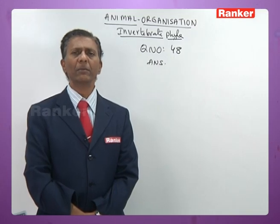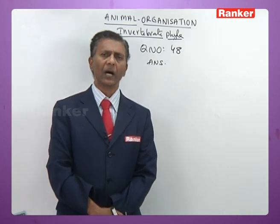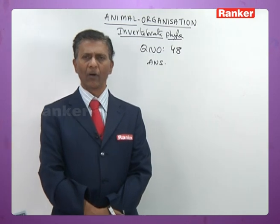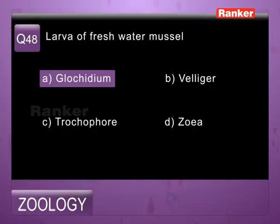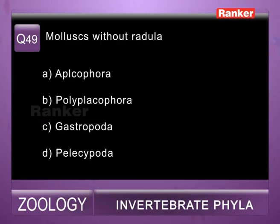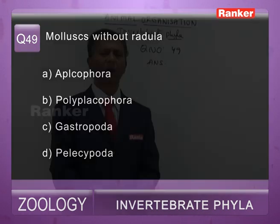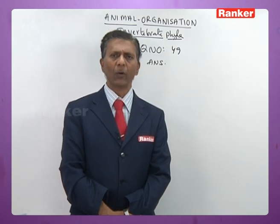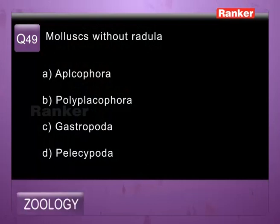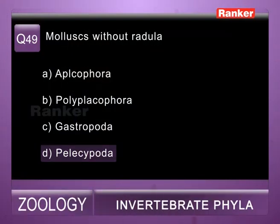Question forty-eight: larva of freshwater mussel — a) glochidium, b) veliger, c) trochophore, d) zoea. Glochidium is the correct answer for forty-eighth question. Question forty-nine: molluscs without radula — a) Aplacophora, b) Polyplacophora, c) Gastropoda, d) Pelecypoda. In Pelecypoda radula is replaced by crystalline style. So forty-ninth question correct answer is d) Pelecypoda.